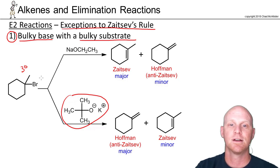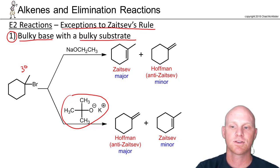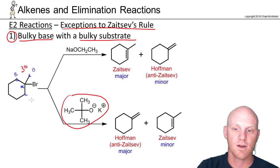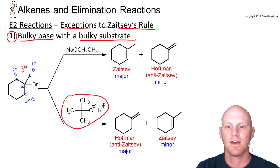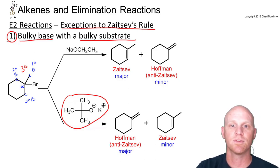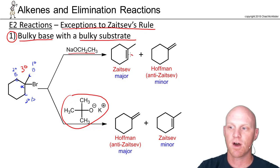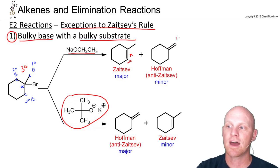Our alpha carbon here is tertiary, and being tertiary it has three adjacent beta carbons — one there, one there, one there. Two of these are secondary and one is only primary. Zaitsev would say use one of the secondaries, and it turns out they're both equivalent. So if we use a normal non-bulky base like sodium ethoxide, the Zaitsev product using one of those secondary beta carbons is the major product, and the Hoffman product using that primary beta carbon is the minor product.